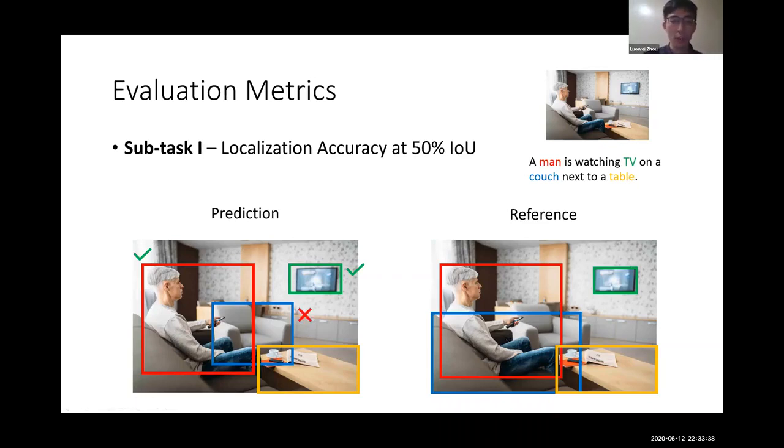Finally, the table is a correct prediction. In this case, the localization accuracy is 3 divided by 4, which equals 75%.